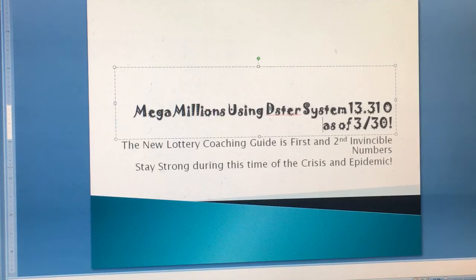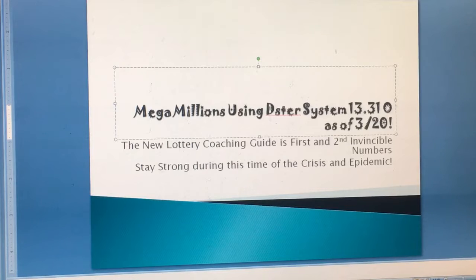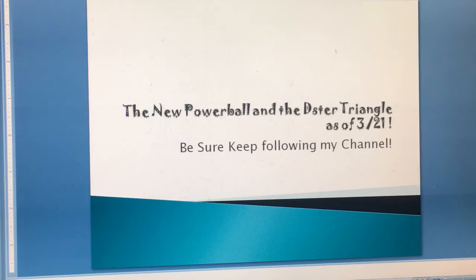I'm going to keep posting videos to help you guys win. Maybe if you win, you'll have money during this time of crisis. So let's win. I know a lot of people want to win, so I'll be using the Mega Millions Dater System 13.31 as of March 20th. I'm going to change the title to as of March 20th.